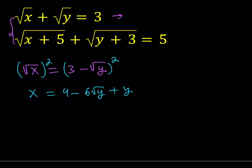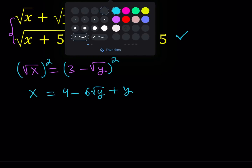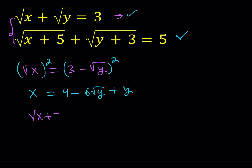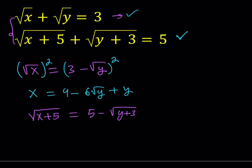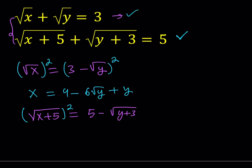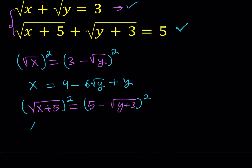Now let's see what we can do with the second equation. I'm going to do something similar — isolate the square root of x plus 5. So square root of x plus 5 equals 5 minus the square root of y plus 3. Then I'll square both sides, which gives me x plus 5 equals 25 minus 10 times the square root of y plus 3, plus y plus 3.